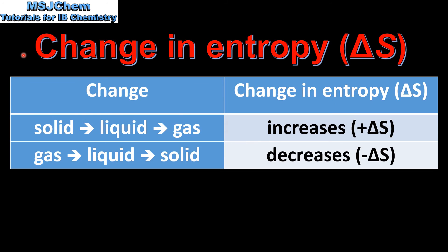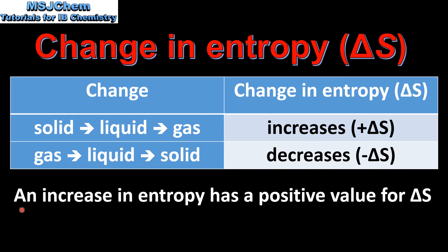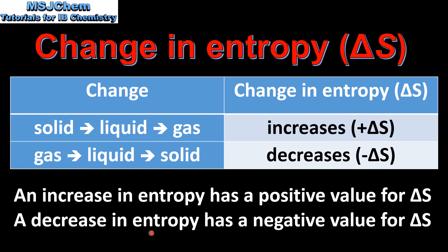Finally we look at the sign of entropy change. If the state changes from a solid to a liquid to a gas, the entropy increases and the sign of the entropy change is positive. If the state changes from a gas to a liquid to a solid, entropy decreases and the sign of the entropy change is negative. So an increase in entropy has a positive value for delta S, and a decrease in entropy has a negative value for delta S.